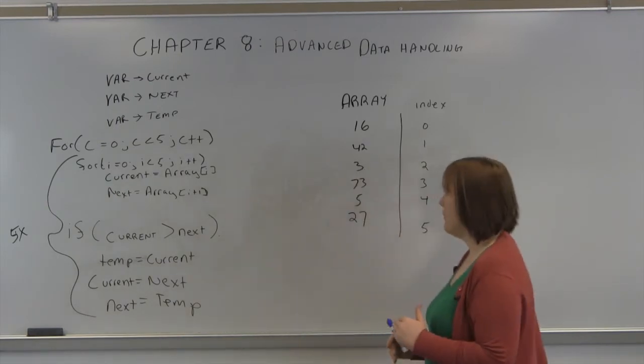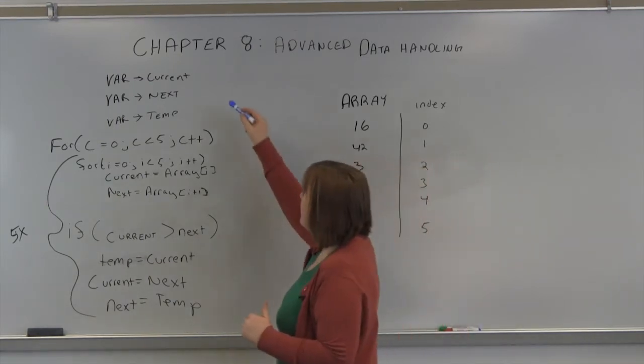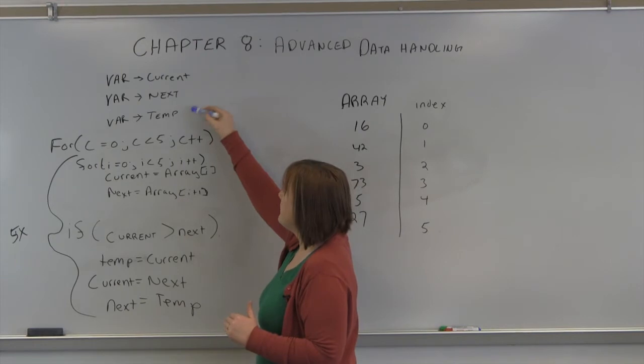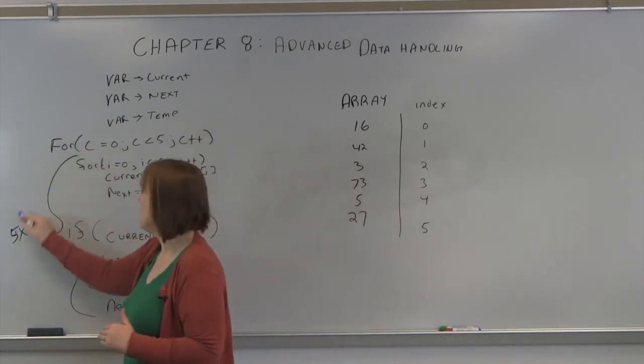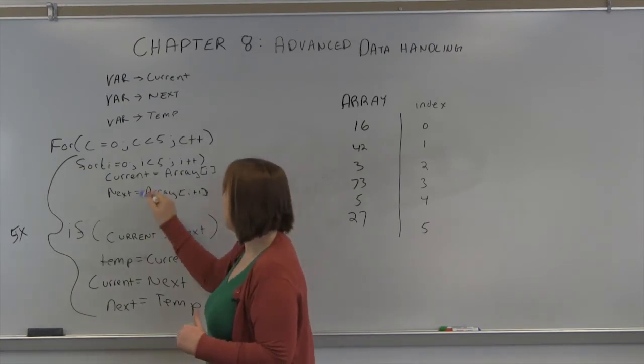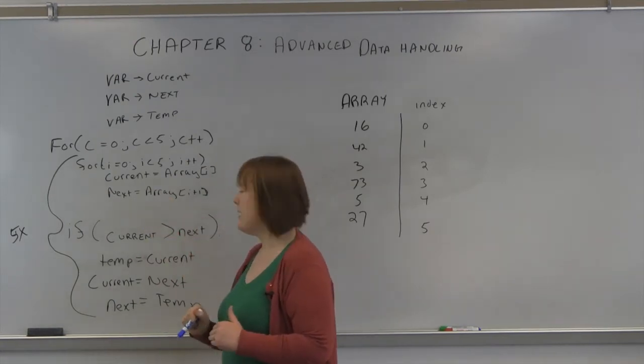So I've set up pseudocode. We have three variables: current, next, and temp. I have two for loops. I have an outer for loop which will execute five times, and I have an inner for loop which will execute five times.